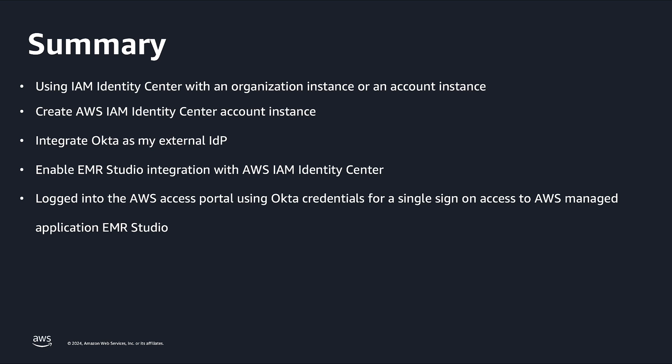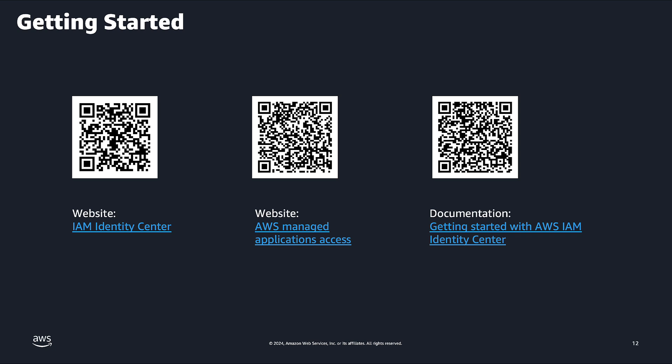Let's summarize what we learned from this demo. First, we looked at the differences between organization and account instance of IAM Identity Center. Next, I created an AWS IAM Identity Center account instance and integrated it with Okta as my external IDP. Then I enabled EMR Studio integration with AWS IAM Identity Center. Afterwards, I logged in to the AWS Access Portal using my Okta credentials for single sign-on access to AWS managed application EMR Studio. Here are some more resources for you to get started — please pause the video and scan the QR code.